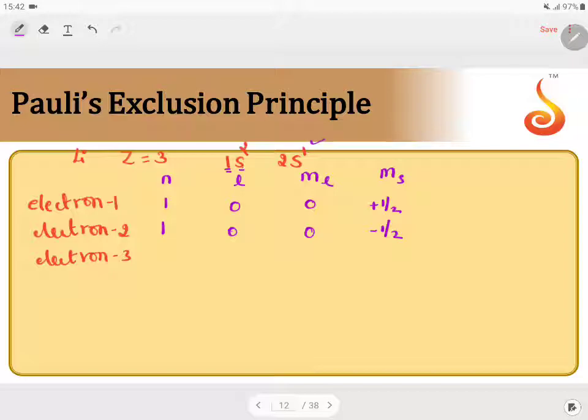If you consider the third electron, principal quantum number is 2. S-subshell, 0. Magnetic quantum number, 0. The spin value either plus half or minus half, I will write it as plus half.